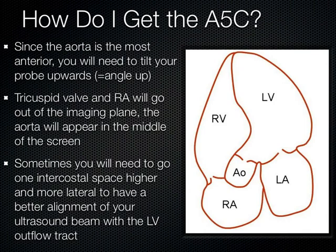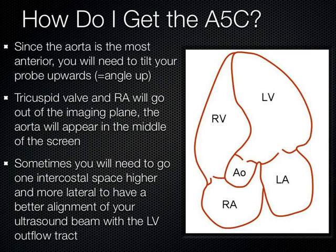Recall that the aortic valve is a little bit more anterior. Once we're in the apical four, we simply fan the probe a little bit more anteriorly, tilt it up a little, and we should see that aortic valve jump to the middle of the screen. The tricuspid valve and right atrium go out of the imaging plane while the aorta maintains itself in the center. Sometimes it's hard in females; you may need to go one intercostal space higher or more superior and slightly more lateral for better alignment. This is all stuff you'll pick up over time practicing.